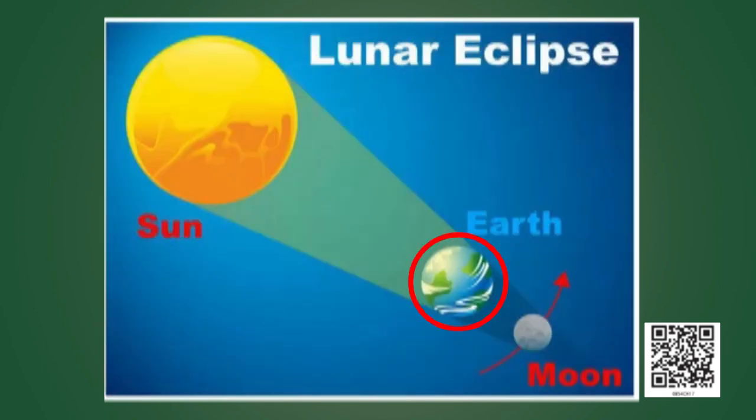On the other hand a lunar eclipse happens when the earth comes in between the sun and the moon, such that the earth blocks the sun rays from falling over the moon. Thus the earth's shadow falls over the moon and from earth it appears red. This is what we call lunar eclipse. To understand this let us do a demonstration.